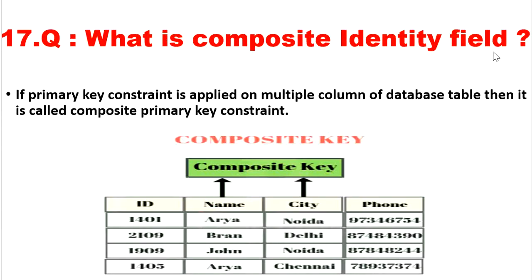The next question is: what is a composite identity field? If a primary key constraint is applied on multiple columns of a database table, it is called a composite primary key constraint. Most of the time, a primary key constraint is applied only on a single column, but when applied on two or more columns, it is called a composite key. There is no duplicate value based on the combination of those columns, making it a composite identity field.